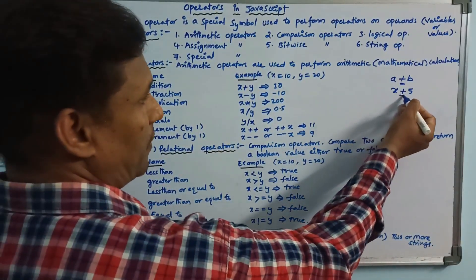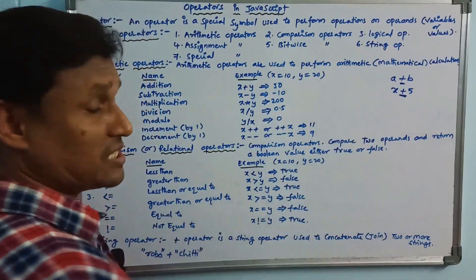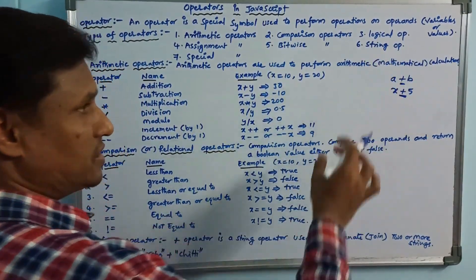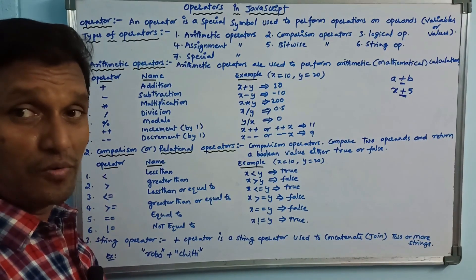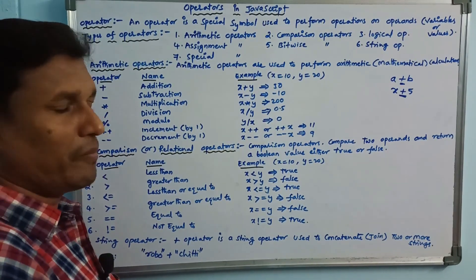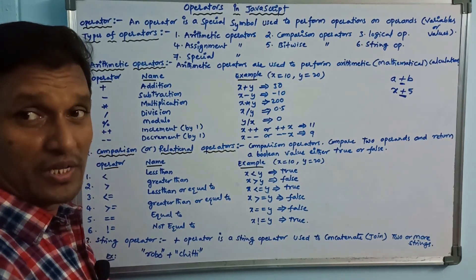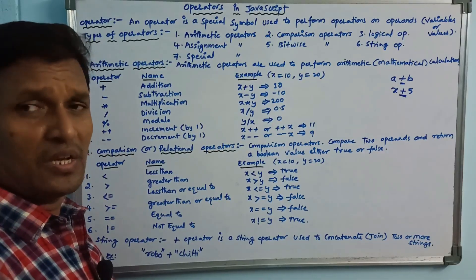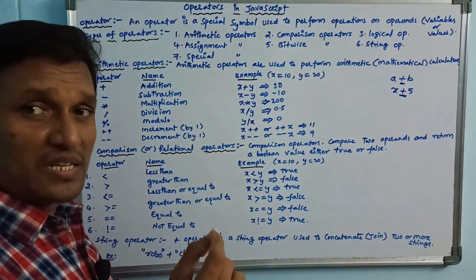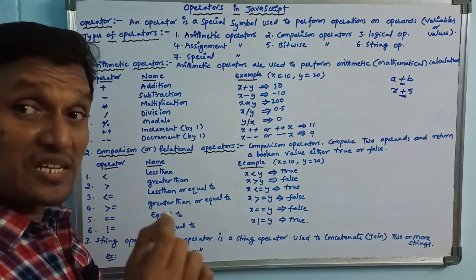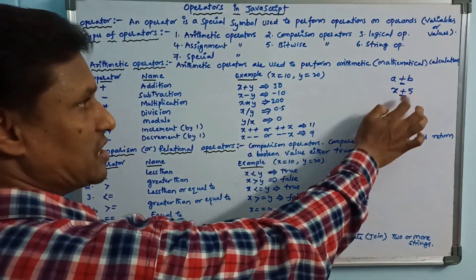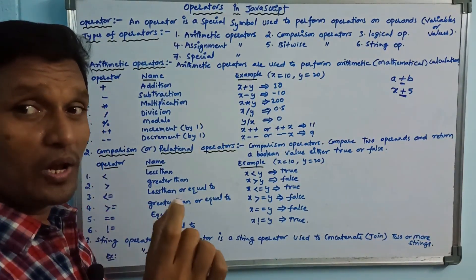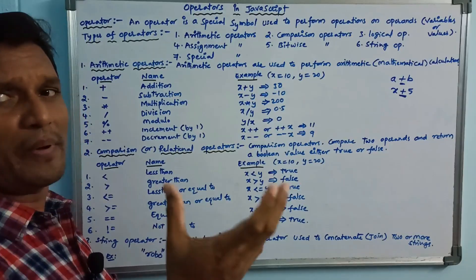Here is the special symbol of the operator. There is a particular operation — there is an addition operation, there is a subtraction operation. So operator is a special symbol used to perform a particular operation on operands.